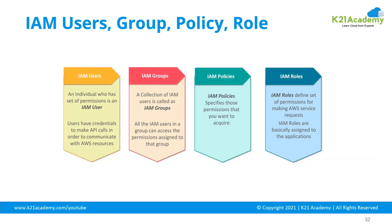Let's begin with an overview of these four main things within AWS: users, groups, policies, and roles. IAM users are individuals like you and me with a set of permissions who can log in to the console, through the command line, or do something on AWS cloud. Users typically have credentials — it could be a password, a key, or something to make an API call or access AWS resources. Groups are collections of IAM users that have a similar set of permissions.